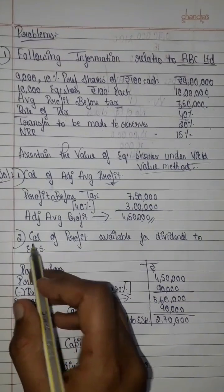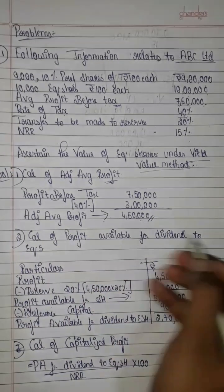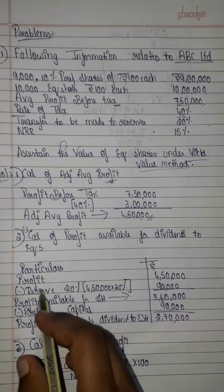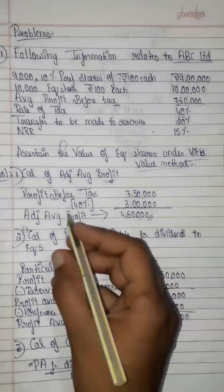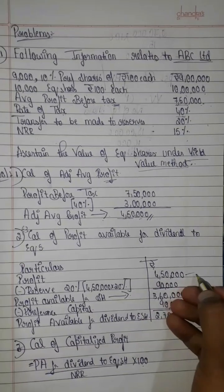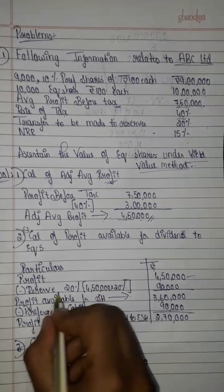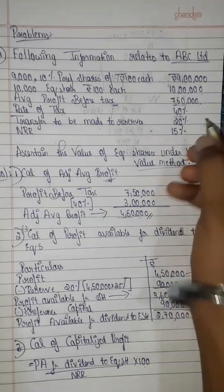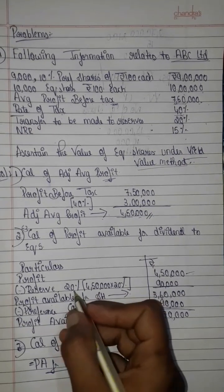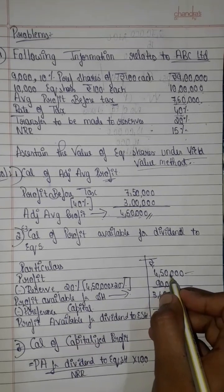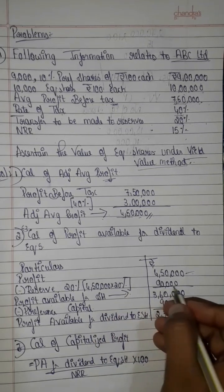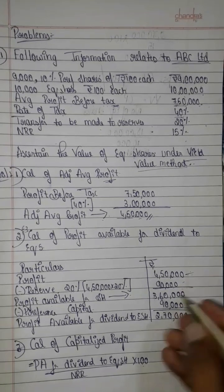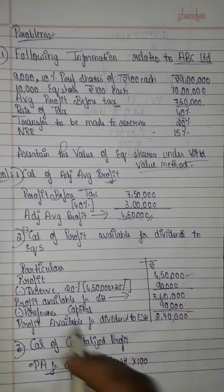Step 2 and 3: Calculation of profit available for dividend to equity shareholders. Starting with adjusted average profit of 4,50,000, we deduct transfer to reserves at 20%, which is 90,000. That gives us 3,60,000 profit available for shareholders.